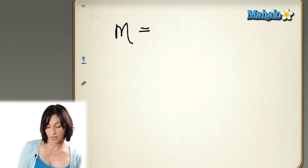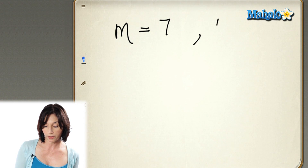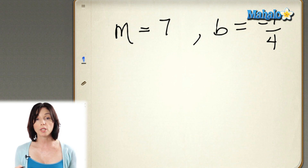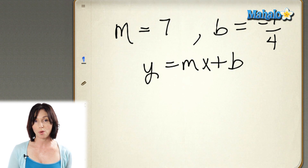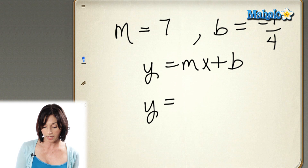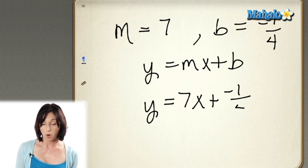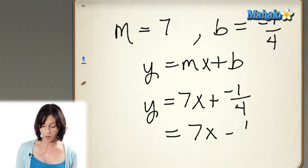If you're given a slope and a y-intercept, you can immediately write down the equation of the line. Let's say the slope is 7 and the y-intercept is negative 1 fourth. Using the standard form y equals mx plus b, the equation of this line is y equals 7x plus negative 1 fourth, or you can rewrite it as y equals 7x minus 1 fourth. So if you're given a slope and a y-intercept, you can write down the equation of a line and graph it. And if you're given the equation of a line in slope-intercept form, you can just look at it and pick out the slope and the y-intercept right away. And that's slope-intercept form.